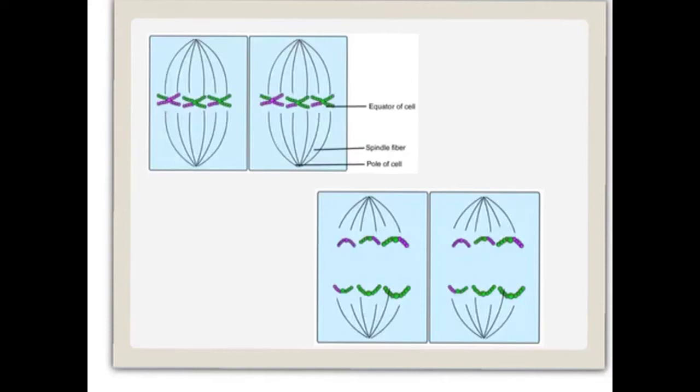During reproduction, each parent will contribute one half the total chromosomes for a total of 46, so meiosis must continue with a second round of cell division.